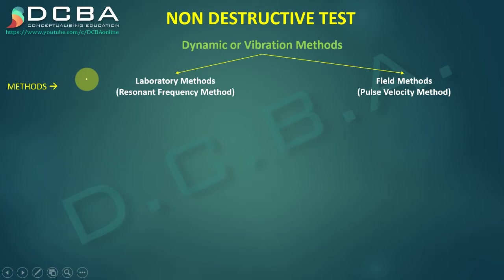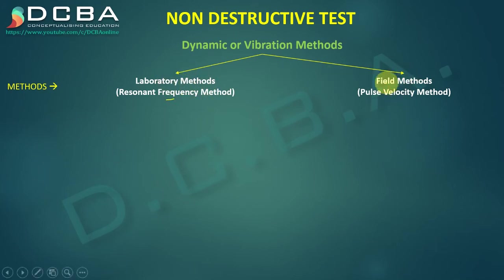In the resonant frequency method, every material has its own resonant frequency at which it vibrates violently. This makes it unsuitable for use on-site, as inducing such vibrations in structures would cause significant damage. Therefore, resonant frequency methods are generally limited to the laboratory, whereas the pulse velocity method, which passes a pulse of sound through the concrete body, can easily be used in the field.